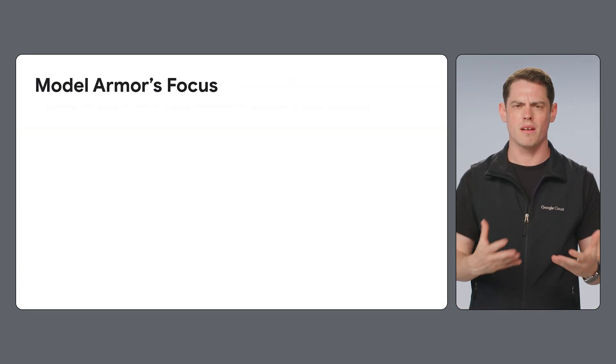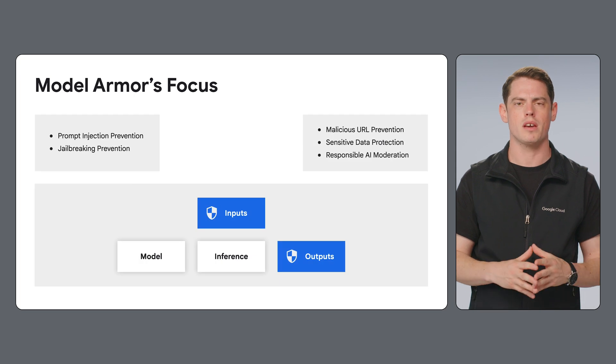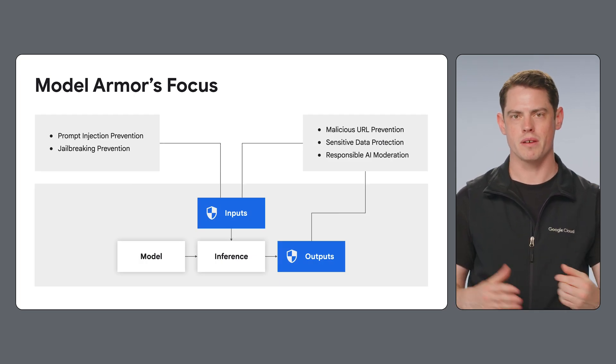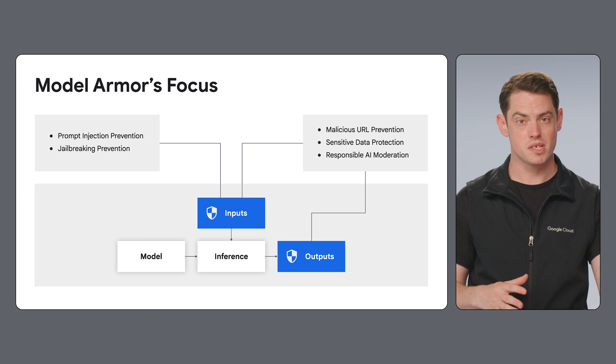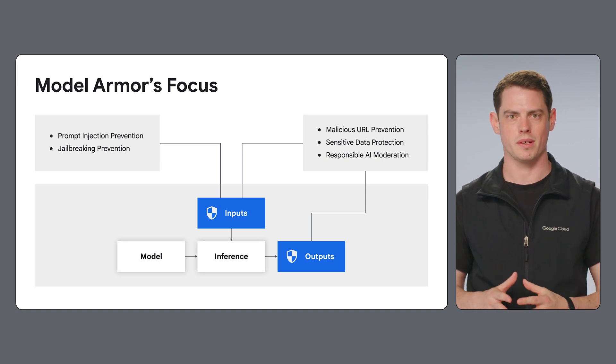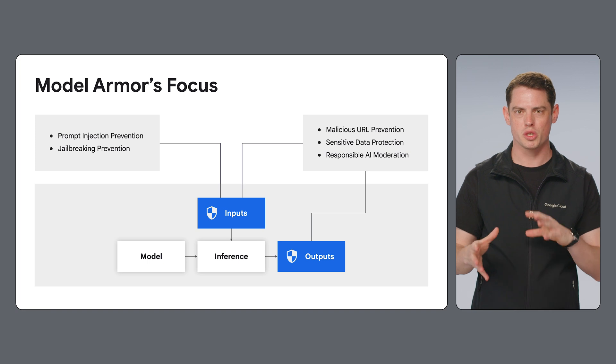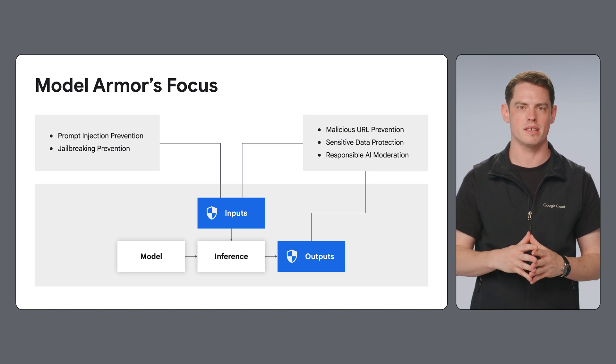What is Model Armor's main area of focus in a Gen AI application? It hardens the most exposed surface — prompts and responses — the parts users see and attackers target most directly. Model Armor sanitizes prompts and responses, ensuring that only safe and authorized content interacts with your AI models. It enforces centralized policies, providing consistent security across your applications, and it detects and alerts you to potential threats, allowing you to take proactive measures.